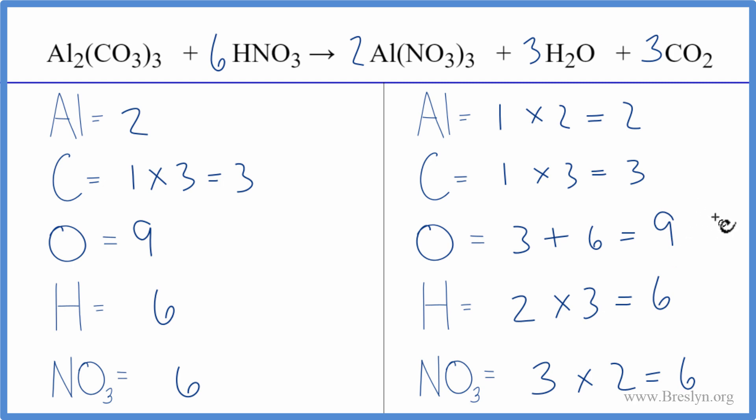This is a pretty difficult equation to balance, especially if you try to count up all the oxygens separately. If you use the nitrate as just one item because it appears on both sides of the equation, that makes it easier. Still a little difficult, but that made it a lot easier.